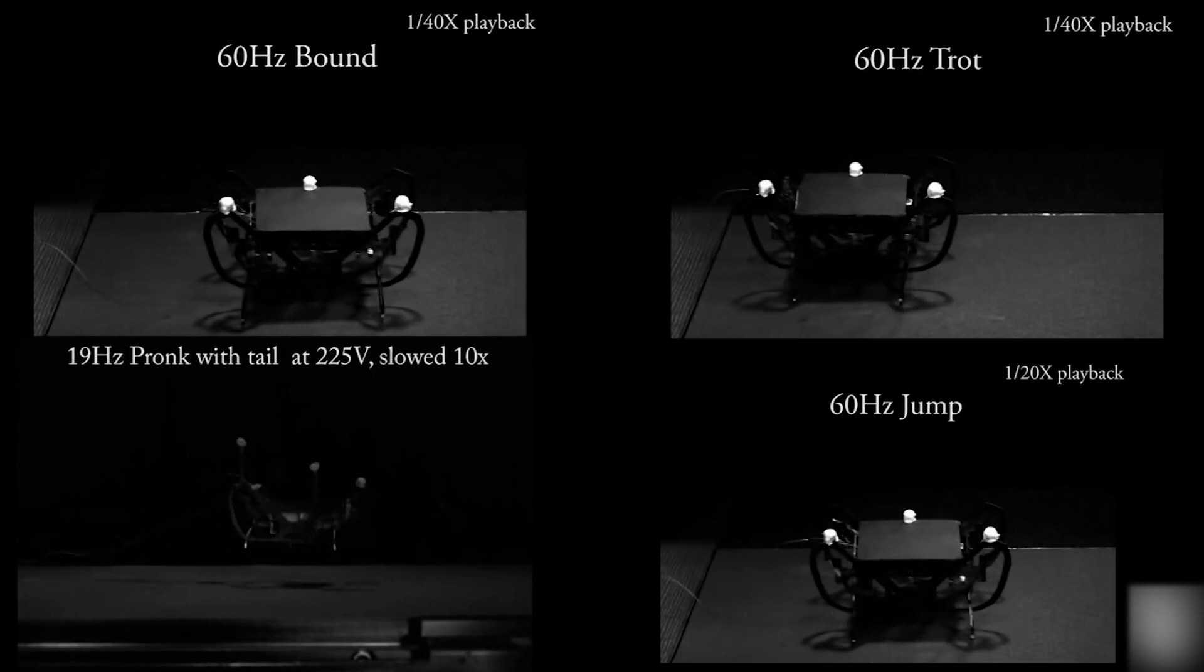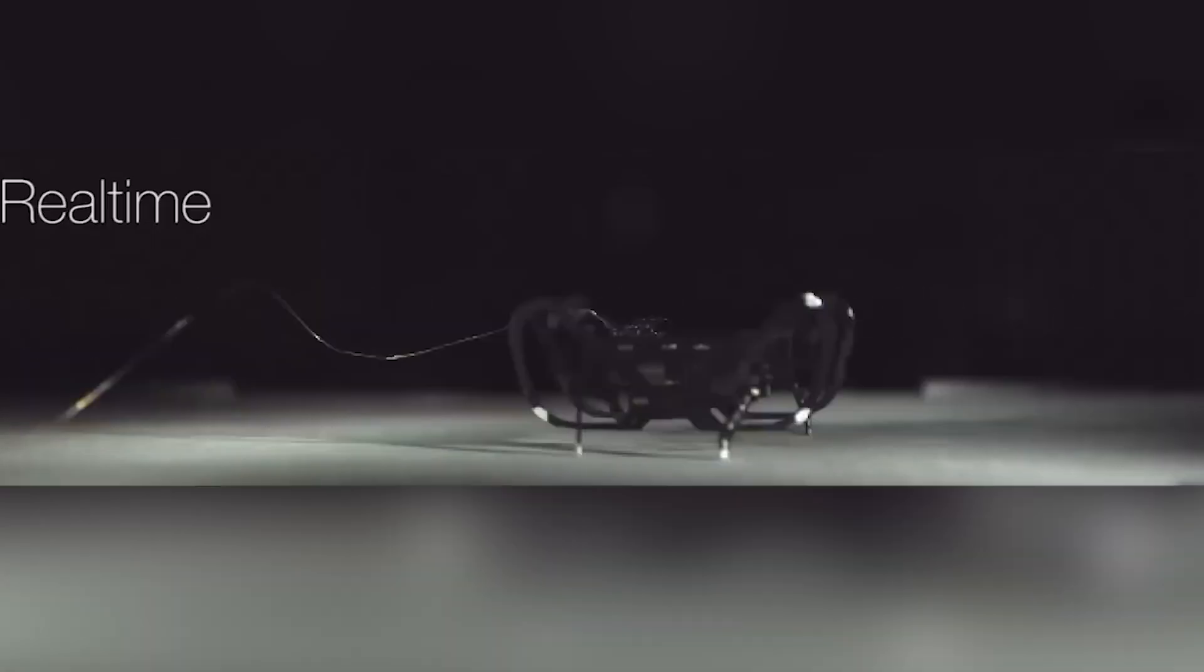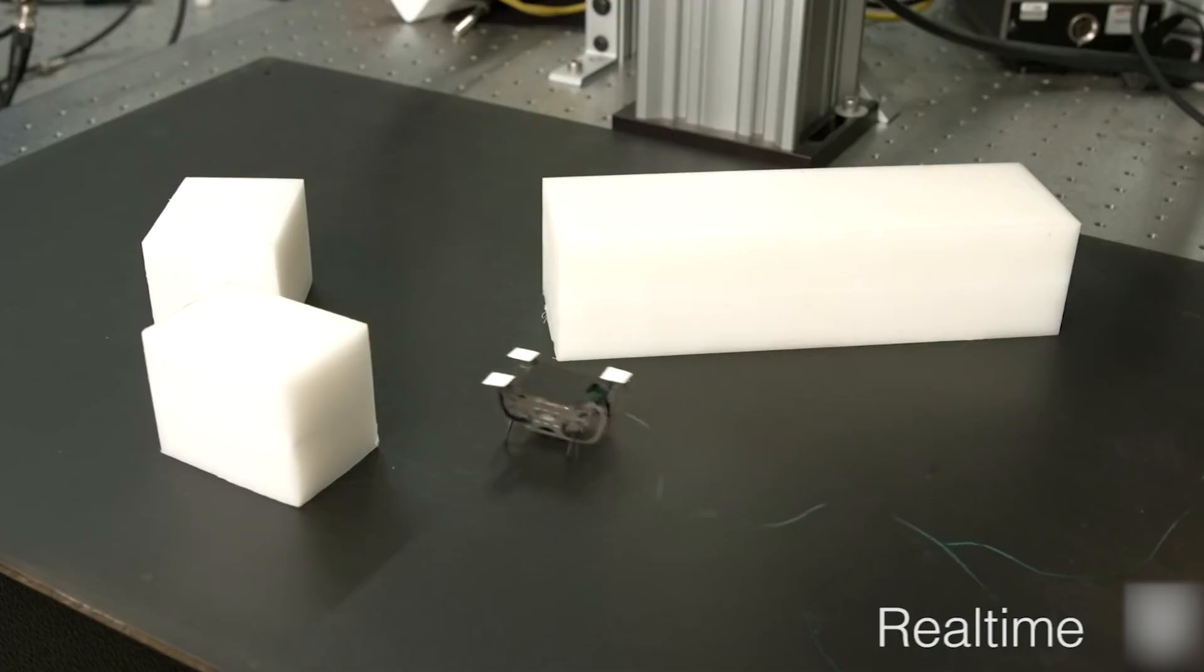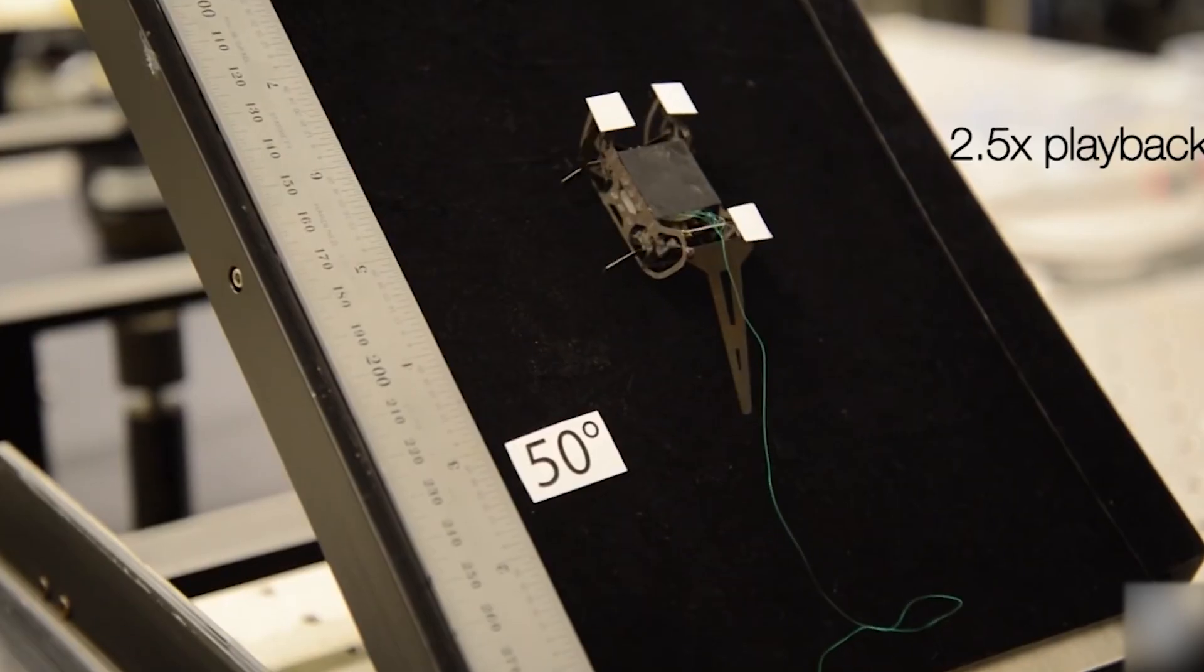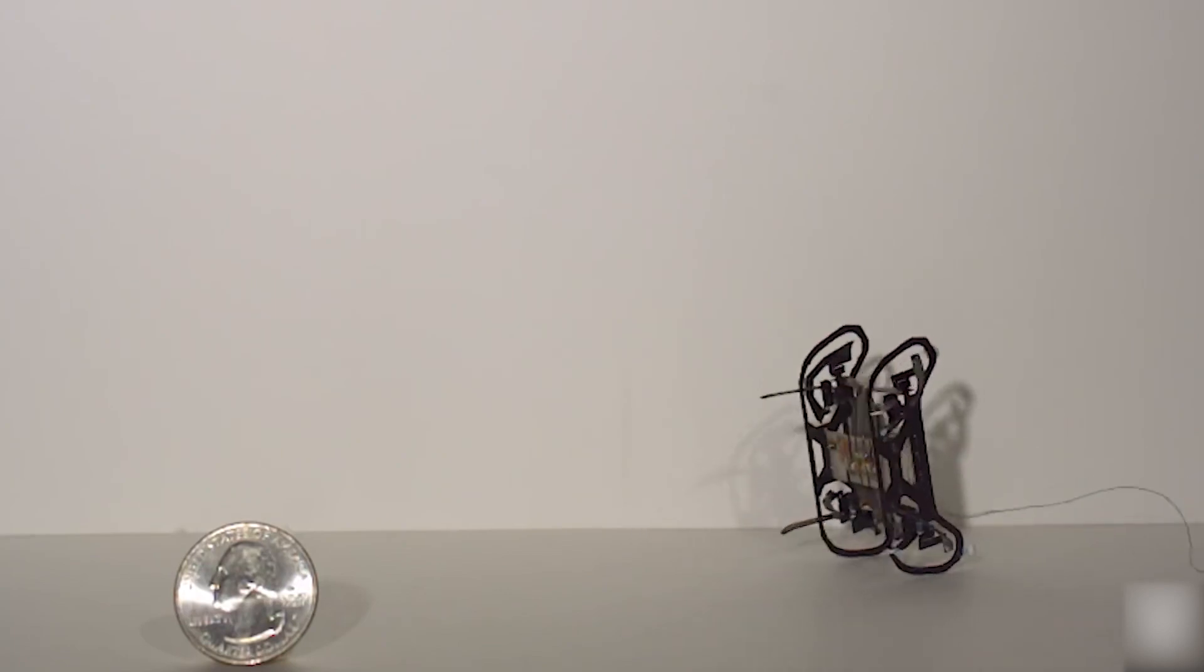If we talk about the speed, these mini cockroaches can go about 14 body lengths per second. It is not able to deal with water yet, but it can run, jump, and do some pretty cool tricks.